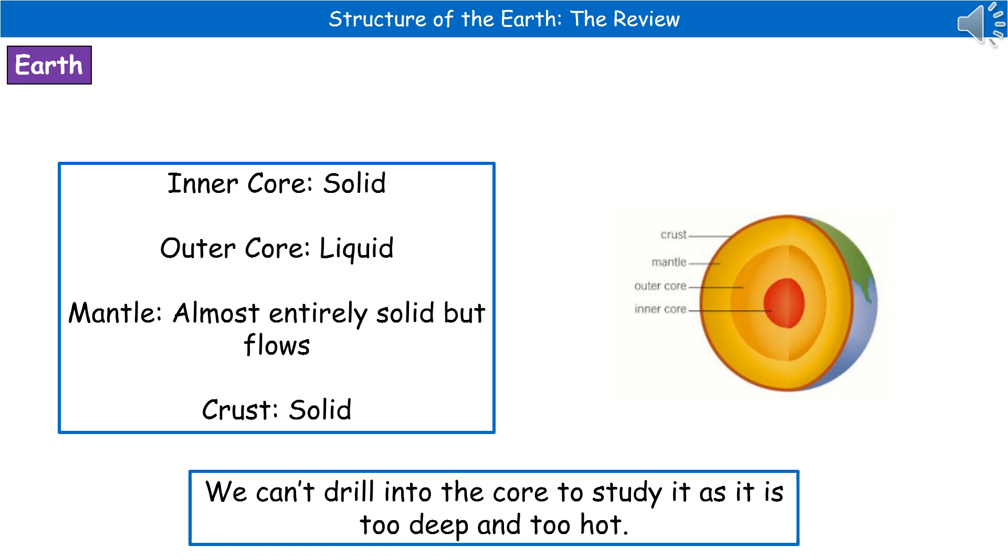When we wanted to find out what the Earth is made from, we weren't able to just drill down and find out what was there. Firstly, it's too deep—we don't have drills that can go that far. Secondly, it gets incredibly hot; only about 12 kilometers down we're already at 180 degrees Celsius.